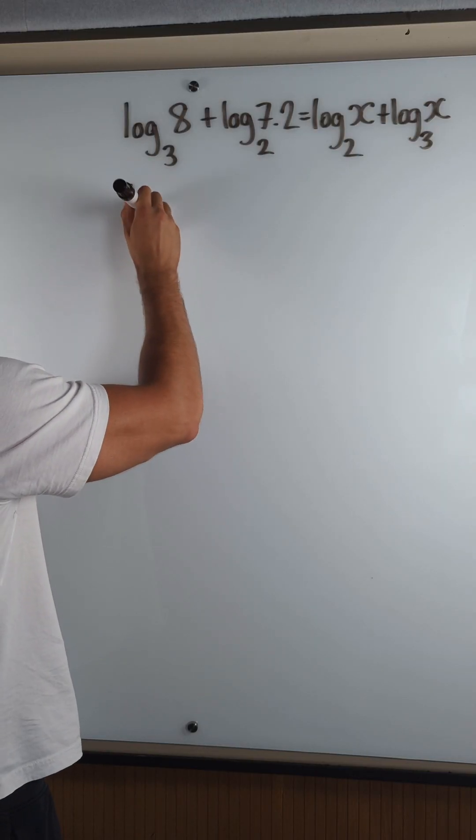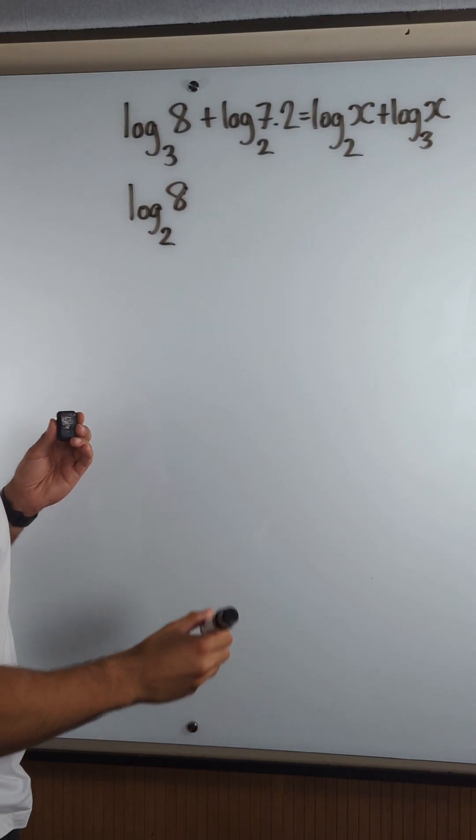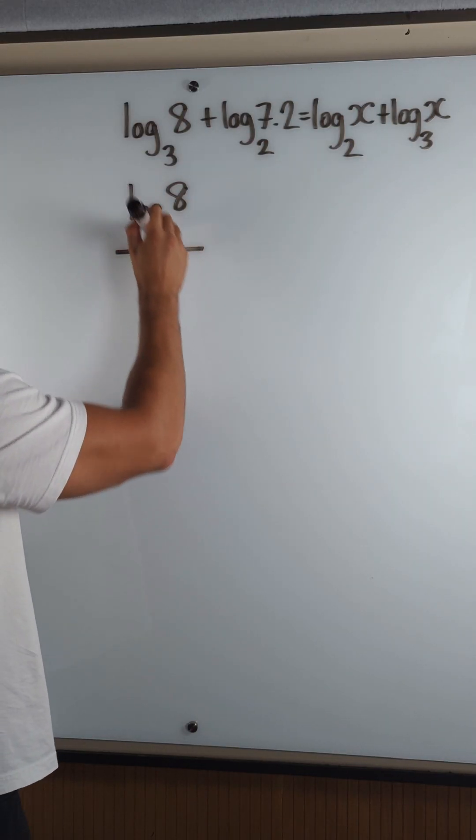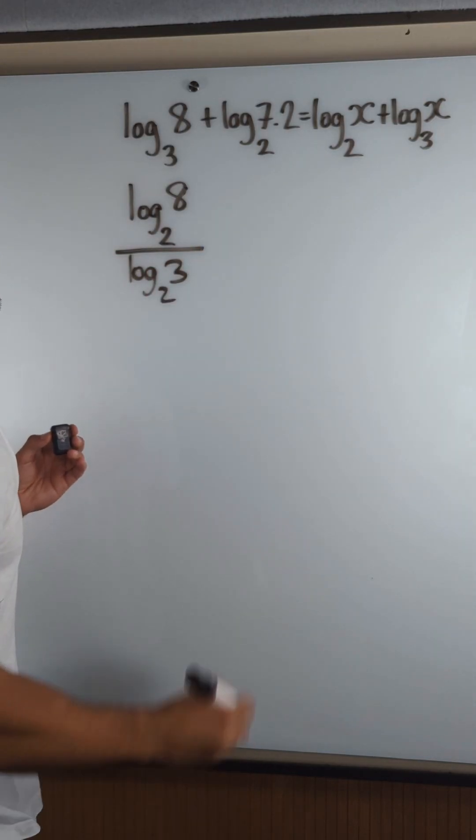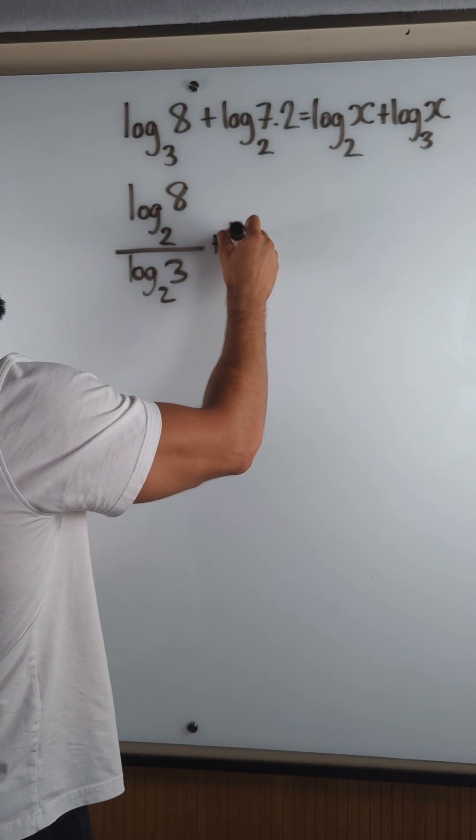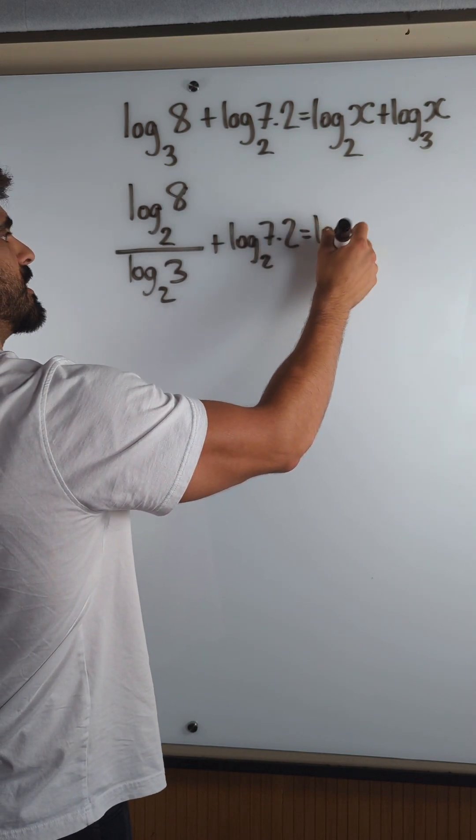I want this to be log base 2 of 8. You just rewrite it, but then you divide by log base 2 of the old base. Okay, here that's already log base 2.